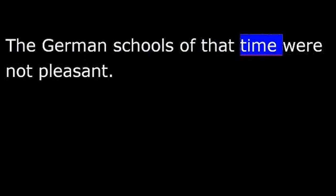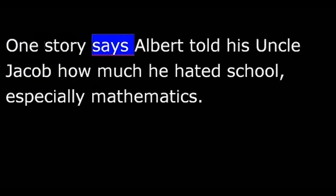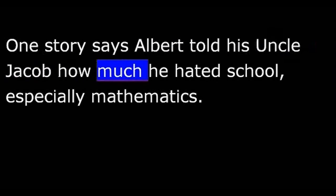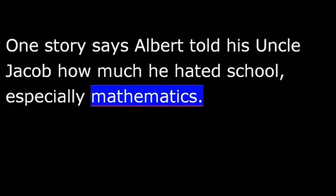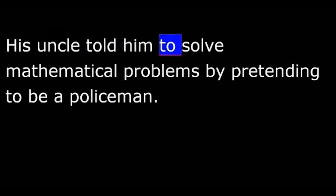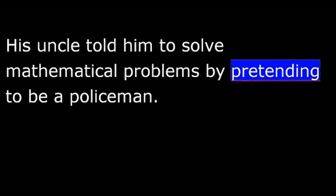Albert did not like school. Albert said he felt as if he were in prison. One story says Albert told his uncle Jacob how much he hated school, especially mathematics. His uncle told him to solve mathematical problems by pretending to be a policeman. You are looking for someone, he said, but you do not know who. Call him X. Find him by using the mathematical tools of algebra and geometry.